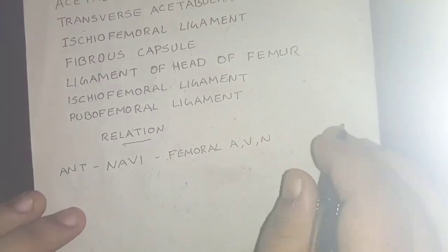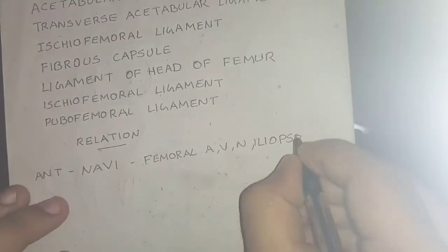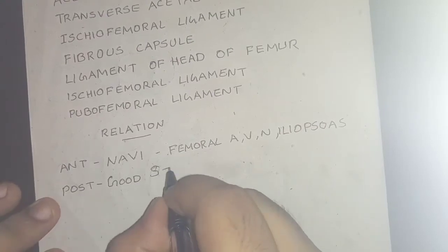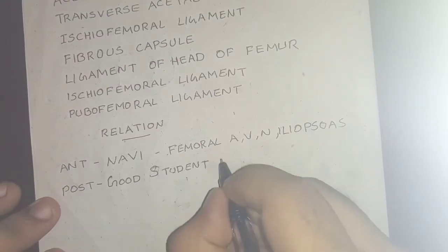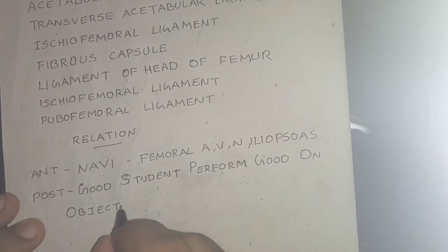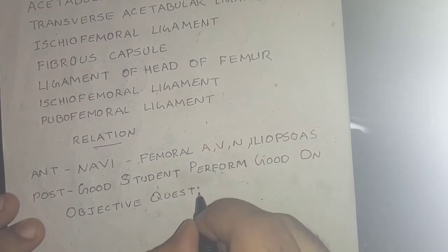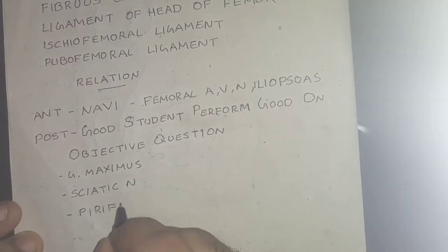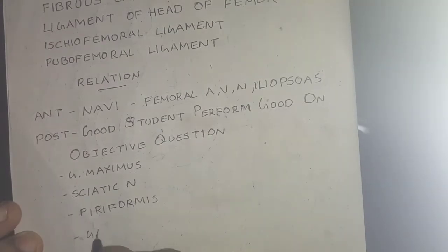For the anterior relation, the mnemonic is NAVI: femoral nerve, femoral artery, femoral vein, and iliopsoas. For the posterior relations, the mnemonic is 'Good Students Perform Good On Objective Questions': gluteus maximus, sciatic nerve, piriformis, gemelli.